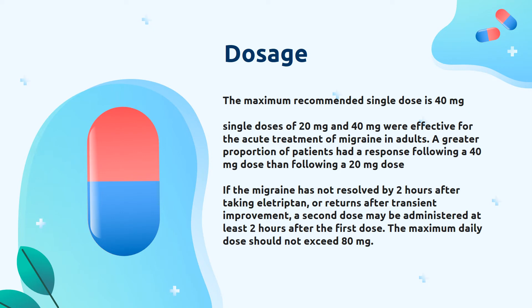What is the recommended dosage for allotriptin? The maximum recommended dose is 40 mg. Single doses of 20 mg and 40 mg are both effective for the acute treatment of migraines in adults. A greater proportion of patients had response following a 40 mg dose than those on 20 mg. If the migraine has not resolved by two hours after taking the first dose, or returned after transient improvement, a second dose may be administered at least two hours after the first dose. The maximum daily dose should not exceed 80 mg.